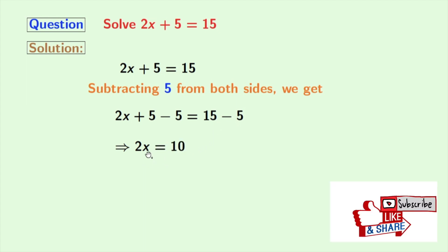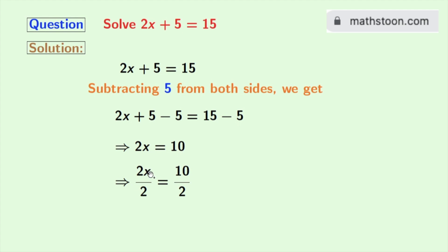Now as the coefficient of x is 2, we will divide both sides by 2. Doing so, we get 2x divided by 2 equals 10 divided by 2.